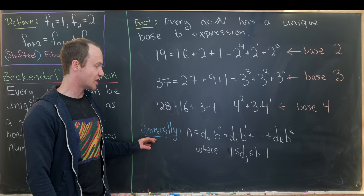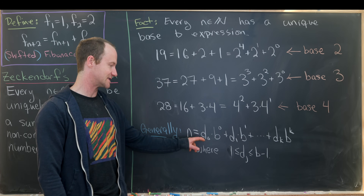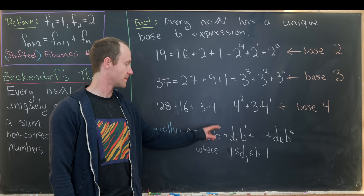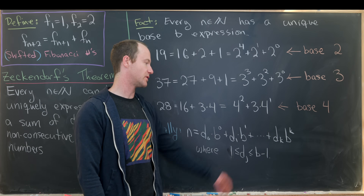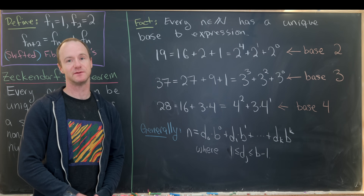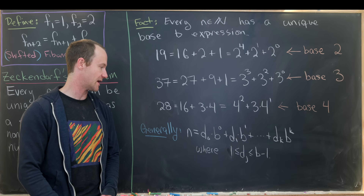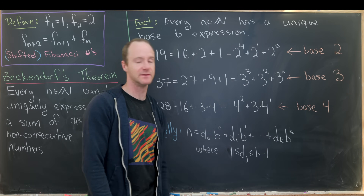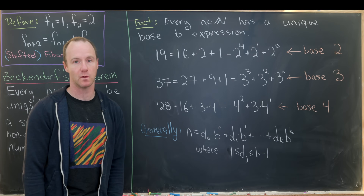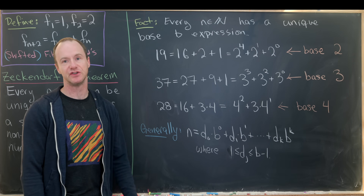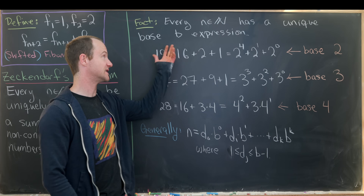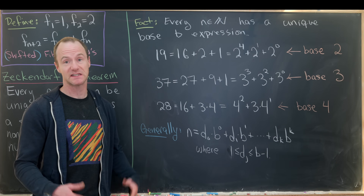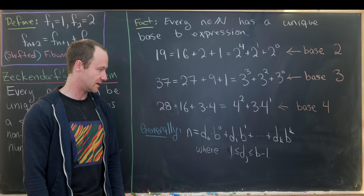In general, we can write n as d₀ times b to the 0 plus d₁ times b to the 1, all the way up to dₖ times b to the k, where the dⱼ's are between 0 and b minus 1. This expression is unique — that's the base-b expansion of n.